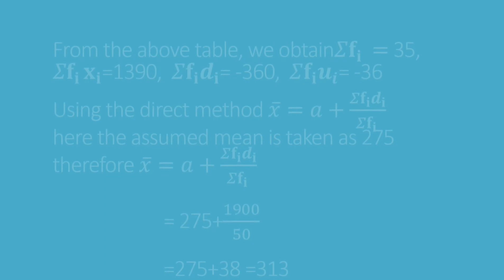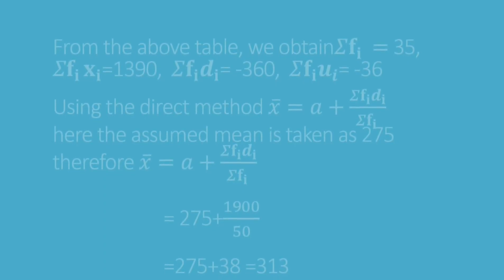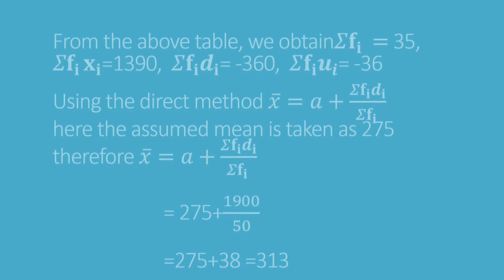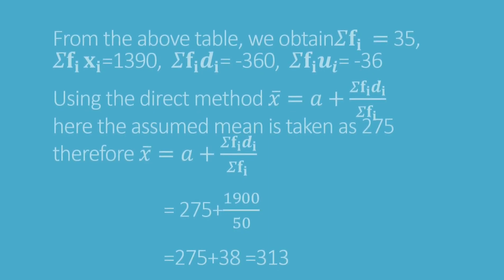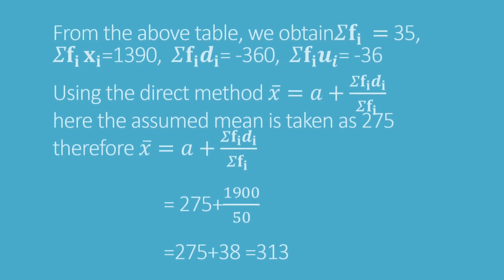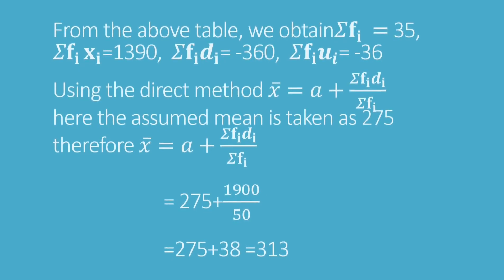Using the direct method, x̄ equals a plus sigma f_i d_i by sigma f_i. Here the assumed mean is taken as 275. Therefore, substituting these values in the formula, we finally get 275 plus 1900 by 50. We get the answer 313.